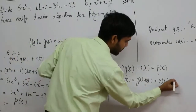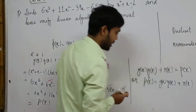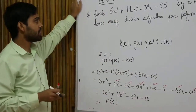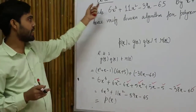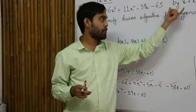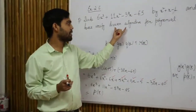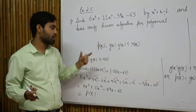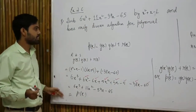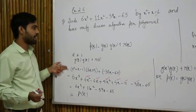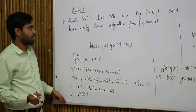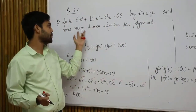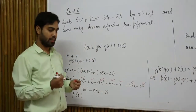This is the solution for this problem. The question asked two things: divide the polynomial by another polynomial, and verify the division algorithm. Note that in certain questions, they will just ask you to divide — in those cases, the verification is not required. Just do the division and mention the quotient and remainder. But when they ask you to verify, you must do the verification part.